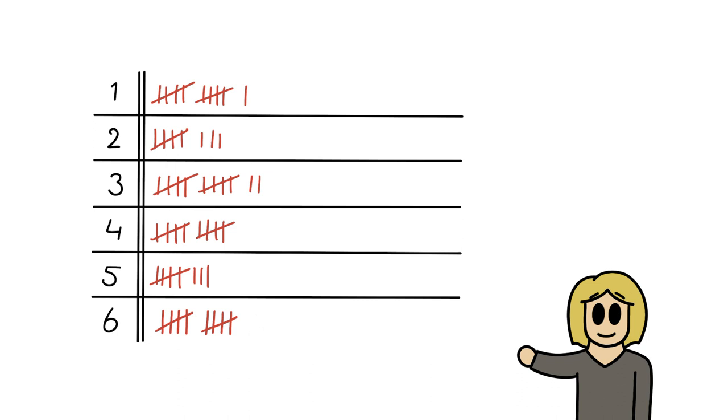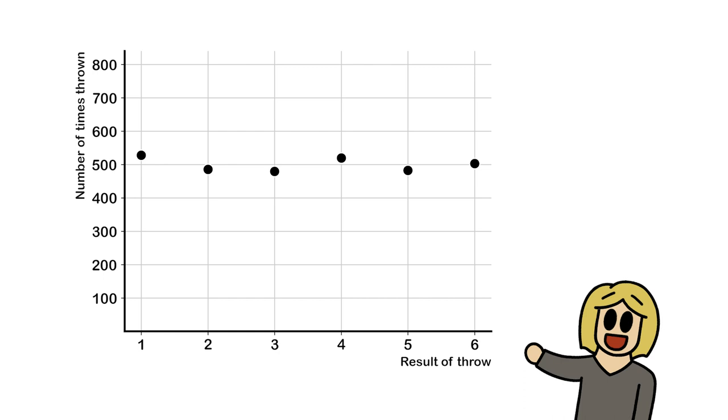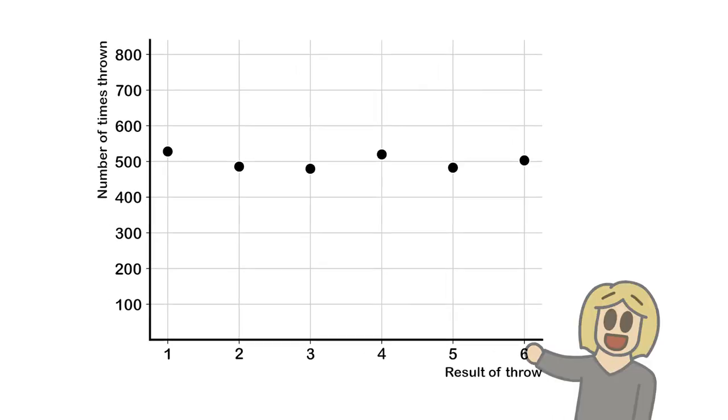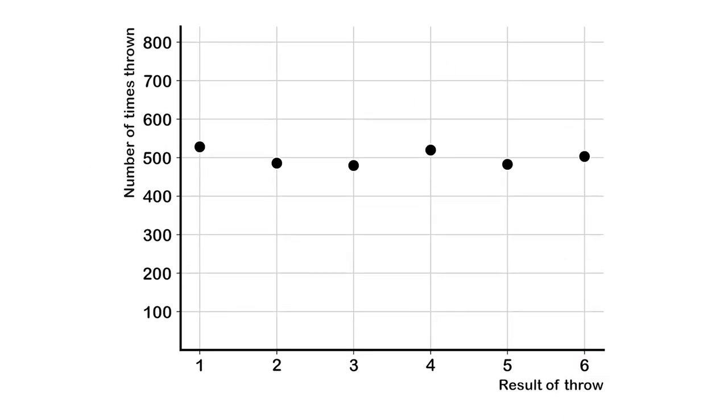You can put the results of your counting in a table like this one, but also more graphically in a diagram like this. This specific diagram shows that each result was obtained more or less the same number of times, which matches with what you would expect for a fair die. However, if you measure a result like this one, you could say with great certainty that the die is not fair. There are way more 6s than you would expect.